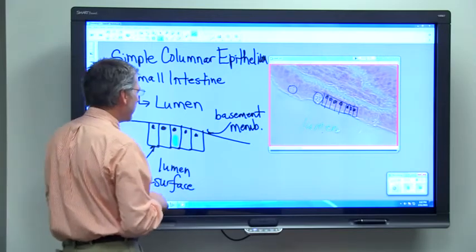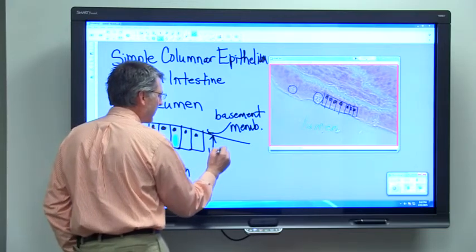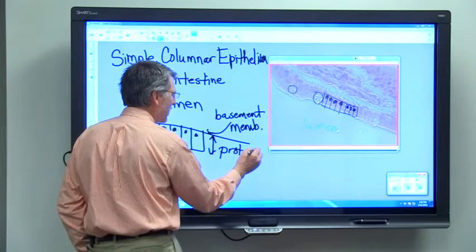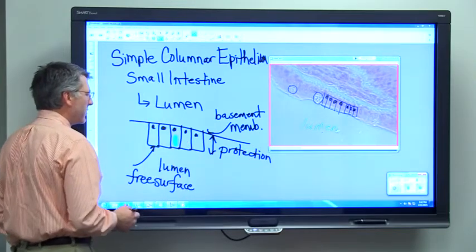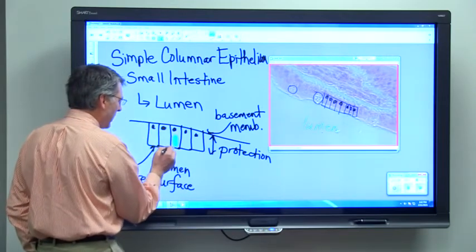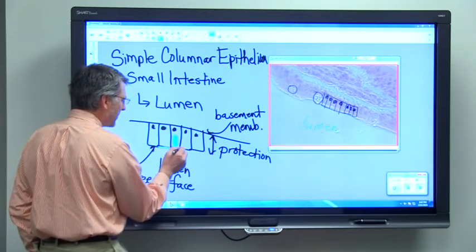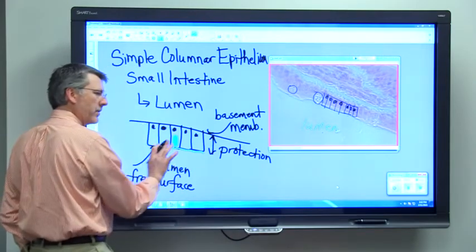Now this tissue has several functions. One is protection. When we look at this as a thick cell, that thickness leads onto some protection. We also have secretion as the goblet cells secrete this mucus, which actually helps to protect the surface of the cell as substances slide across.